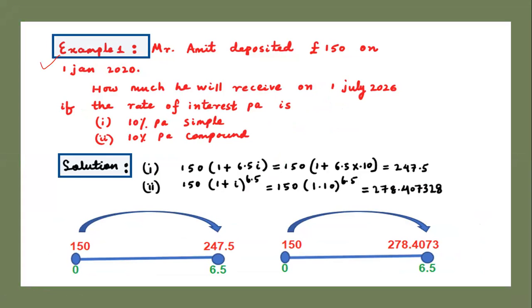This is the first example. Mr. Amit deposited 150 on 1 January 2020. How much will he receive on 1 January 2026 — that is 6 years — and again July, another half year, so 6.5 years in total. If the rate of interest per annum is 10% per annum simple or 10% per annum compound. It's so easy: 150 deposited for 6.5 years. For simple interest, 6.5 is the coefficient of i. However, in case of compound interest rate, 6.5 is the power. That's how we got a little bit extra: 278.407328.